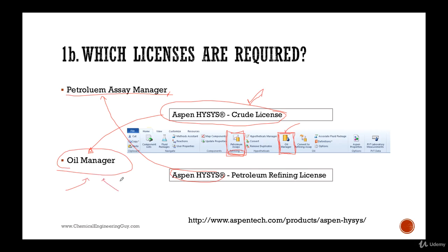Overall, the oil manager is best for modeling processes, while the petroleum refining license is more theoretical — most likely useful if you work directly with a lab rather than in a plant. But we are going to see both of them, so take the most advantage of both.